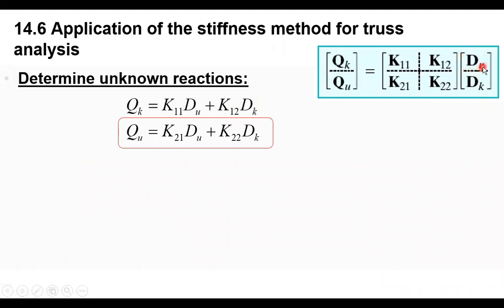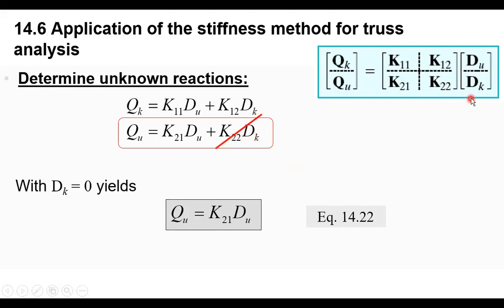Once we get the unknown displacements, we find the unknown external reactions using the bottom part of the matrix: Q-unknown equals K21 times DU plus K22 times DK. Again, DK is usually zero, so this simplifies to Q-unknown equals K21 times DU. Since we already found DU, we just multiply K21 by DU to get the reactions — no matrix inverse is needed here.